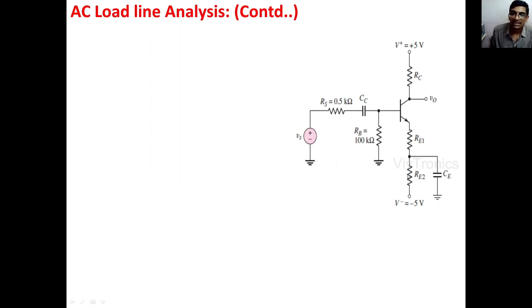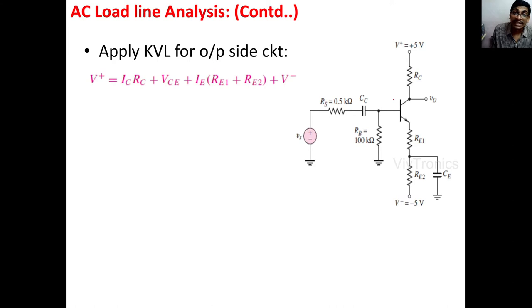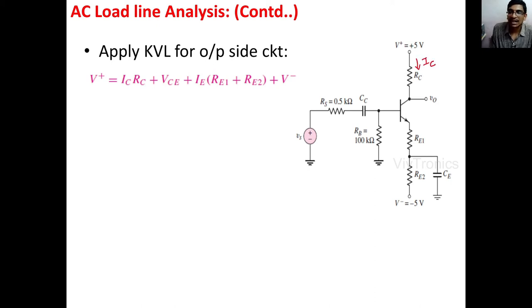The emitter contains two resistors, Re1 and Re2, with an emitter bypass capacitor Ce in parallel with Re2. The transistor operates with two supply voltages: V+ at the collector terminal and V− at the emitter terminal. To get the DC load line points, we apply KVL for the output side loop using DC signals. The current in the collector terminal is Ic and in the emitter terminal is Ie.